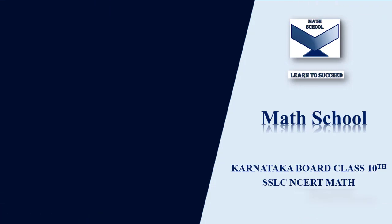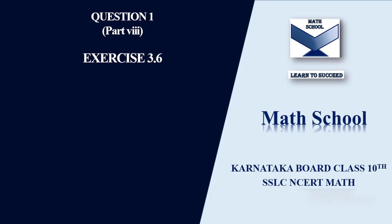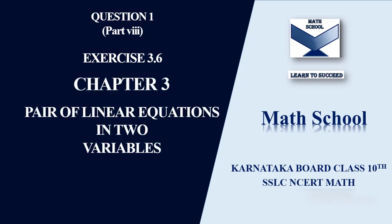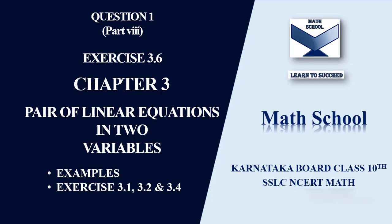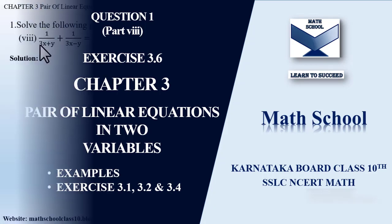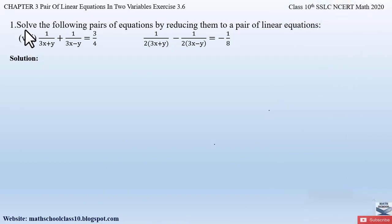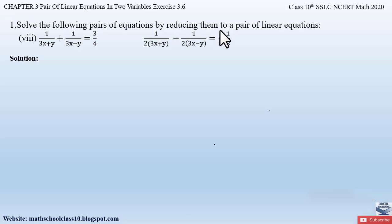Welcome back to my channel Math School. In today's video let us solve part 8 from question number 1, exercise 3.6, chapter 3: Pair of Linear Equations in Two Variables. In my previous videos I have completed the example problems, exercises 3.1, 3.2, and 3.4. Part 8 from exercise 3.6 says: solve the following pairs of equations by reducing them to a pair of linear equations.